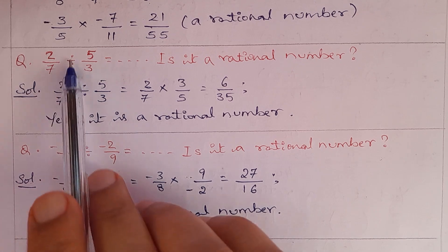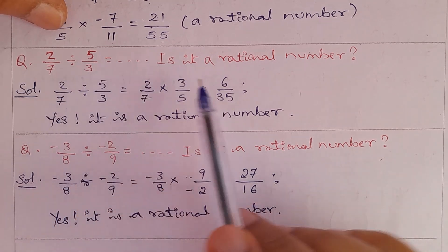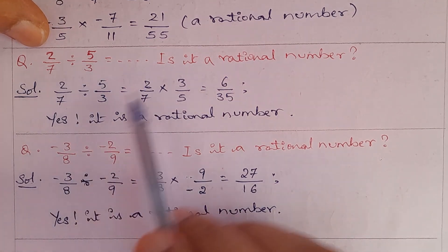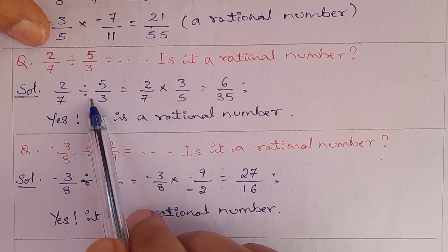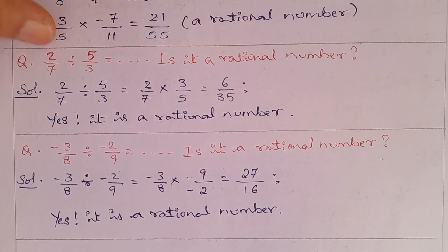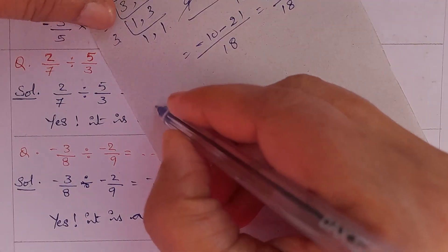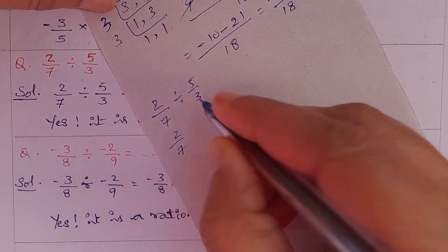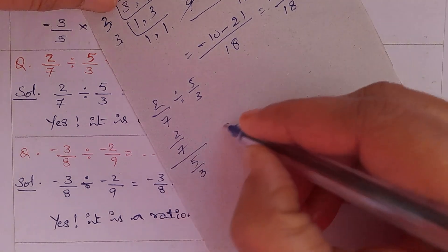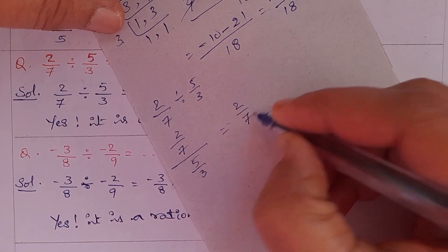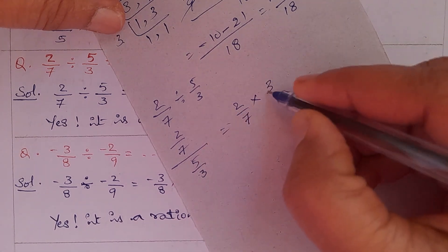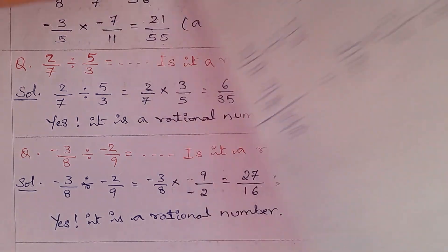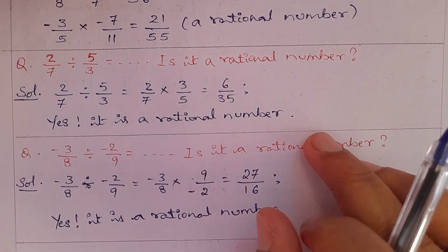Next: 2/7 ÷ 5/3 — is it a rational number? 2/7 divided by 5/3 equals 2/7 multiplied by the reciprocal, which is 3/5. So 2 × 3 = 6 and 7 × 5 = 35. The answer is 6/35, a rational number.